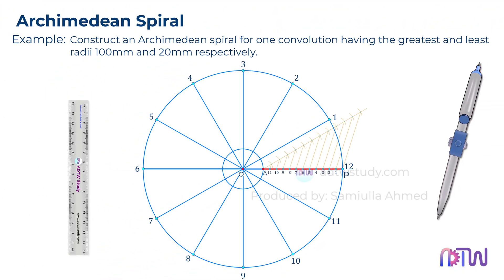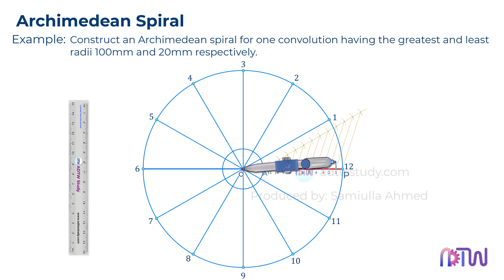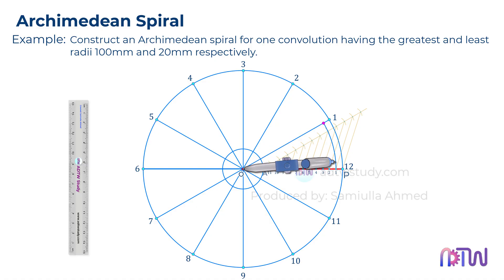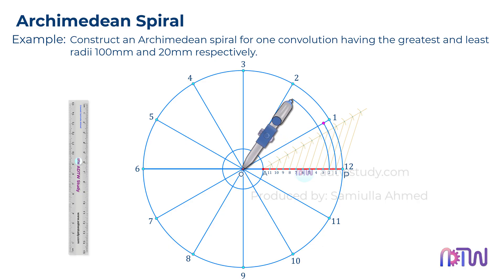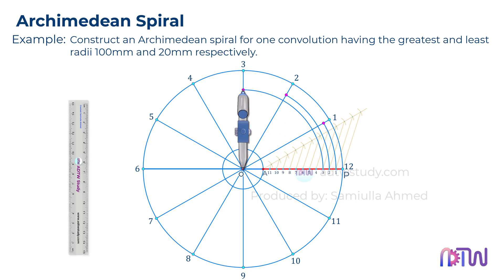After this, take a compass and adjust it to the length between center point O and 1, and draw the arc up to line 1 as shown. Next, adjust the compass to the length between point O and 2, and draw the arc up to the second line dividing the circle. Similarly, adjust it to the length between point O and 3, and draw the arc up to line 3, and so on up to line 11, as shown.